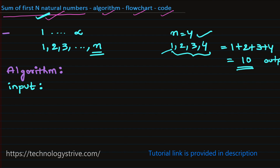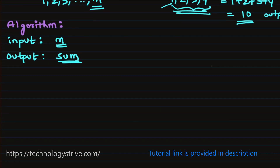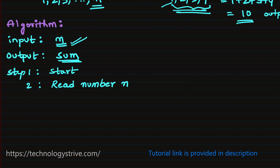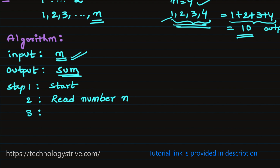For this algorithm, the input is just one value: N, and the output is the sum produced by adding the first N natural numbers. Step 1 of the algorithm is always Start. Step 2: we need to read the number N from the user, so we write 'Read number N'.